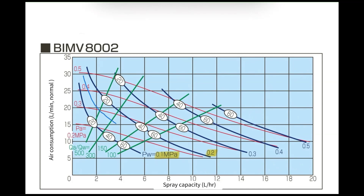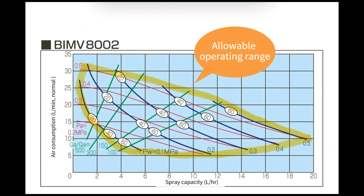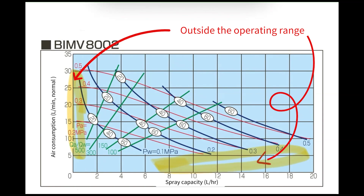For example, right in the middle of the liquid lines Pw = 0.1 and Pw = 0.2 megapascals, there is a liquid pressure of 0.15 megapascals. The area enclosed by these lines is the allowable spray range for this nozzle. Outside the range, spraying will fail or cause hunting.